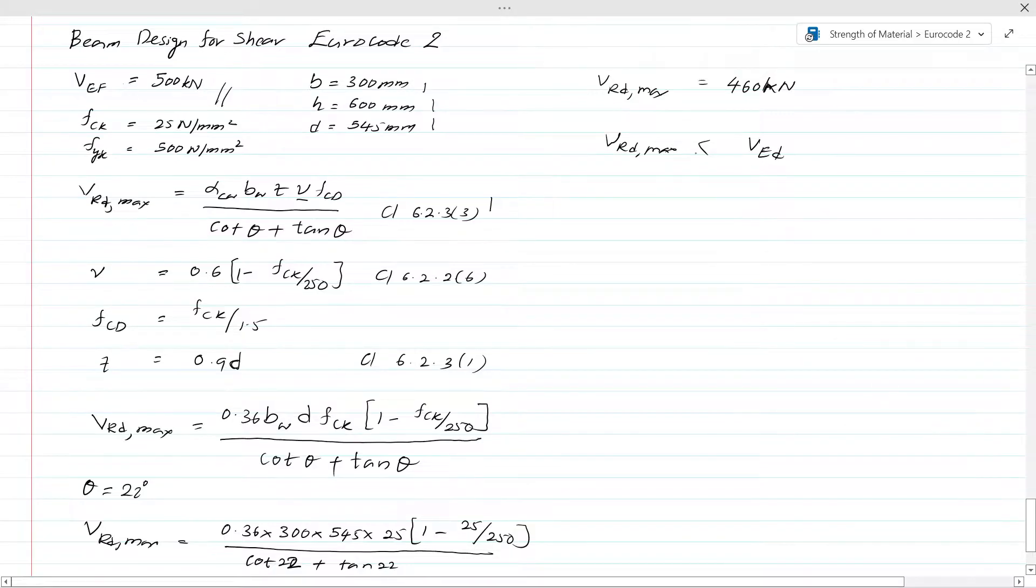If VRd,max is greater than VEd, then we don't need to proceed further to the shear reinforcement calculation. We don't want to find the angle of the compression strut. But since this is less, we have to go to the next step and calculate the angle θ.